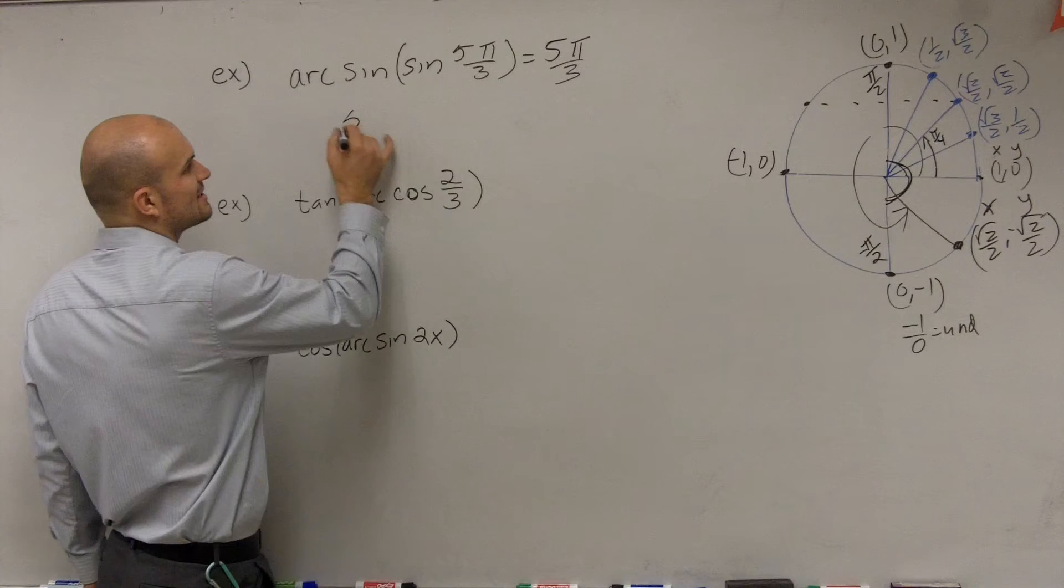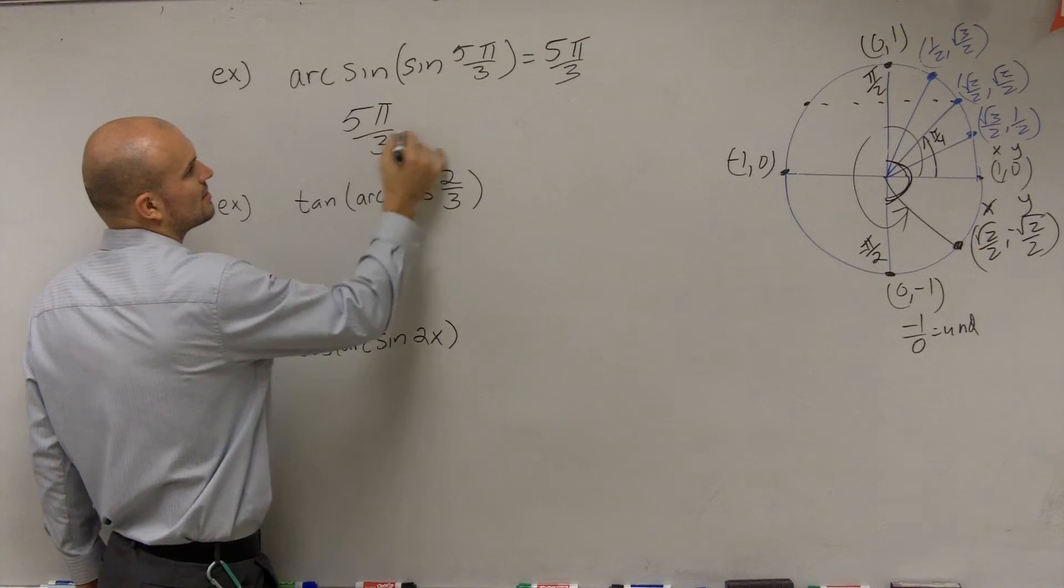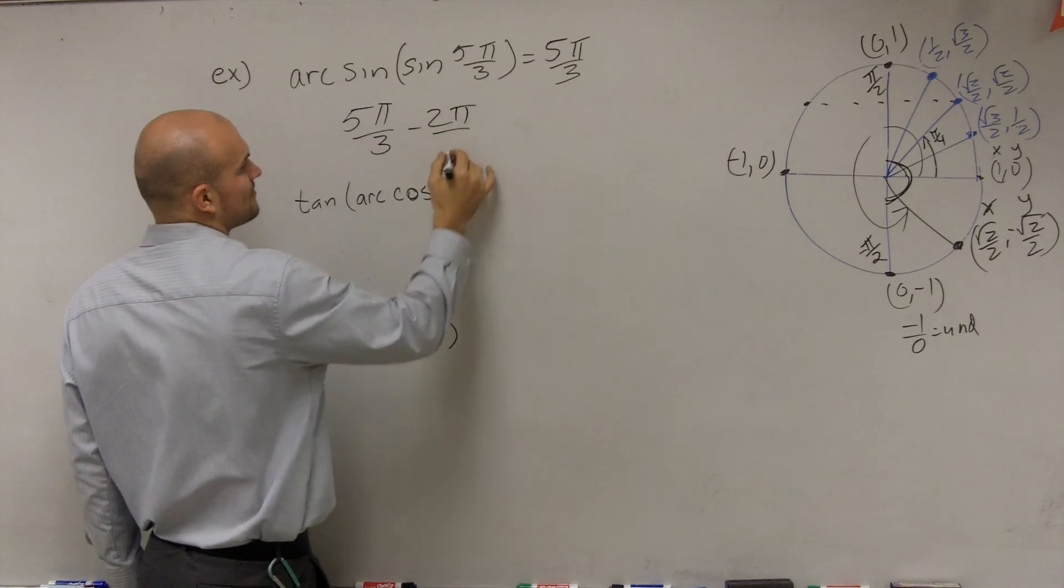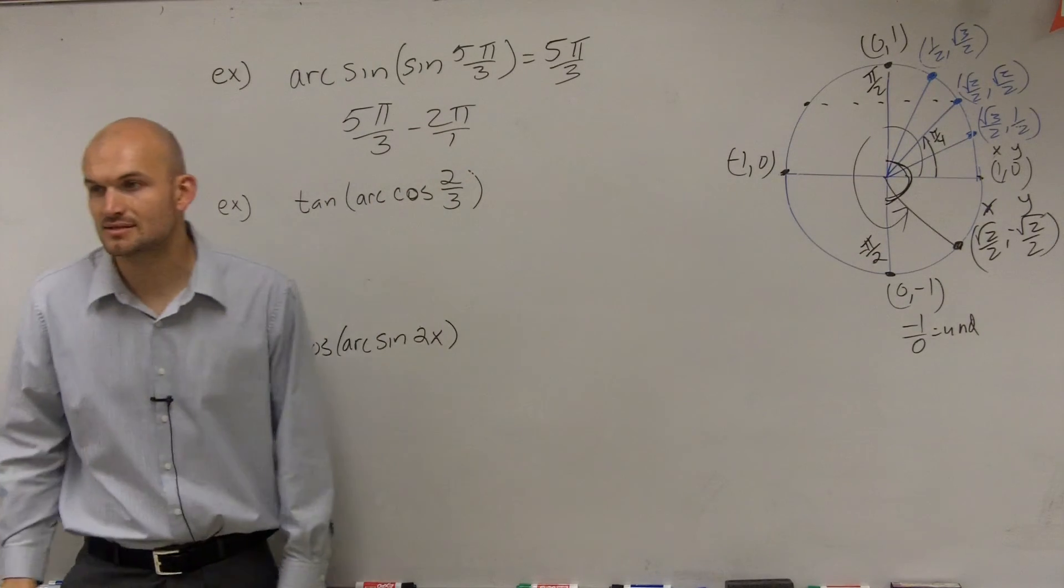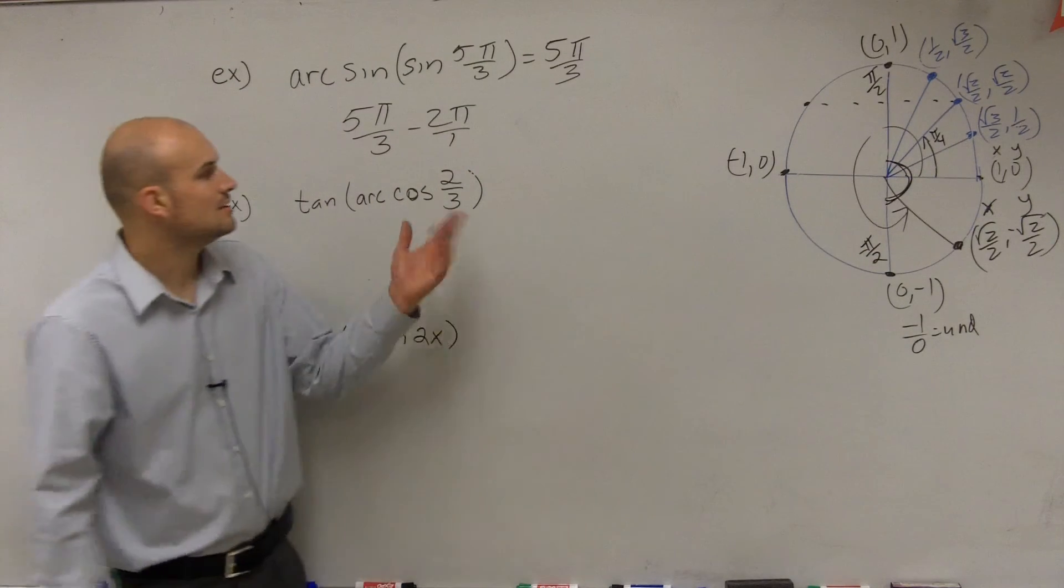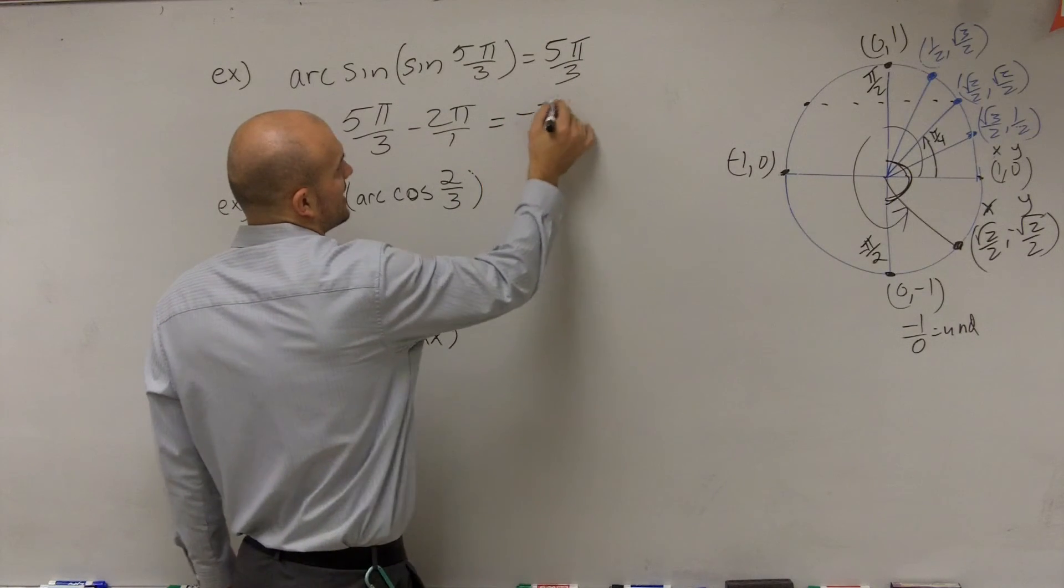So what we're going to have to do is, again, find coterminal angles. So you subtract 2π, which is the same thing as 6π over 3. So therefore, you're going to end up going to get negative π thirds.